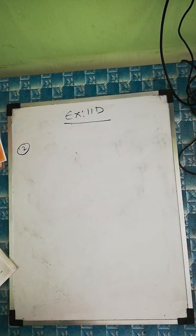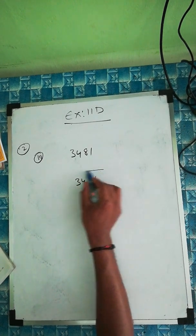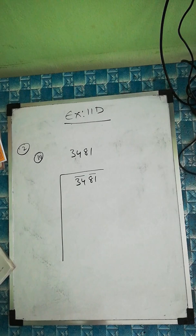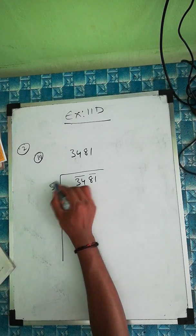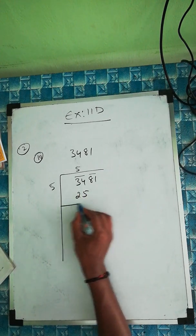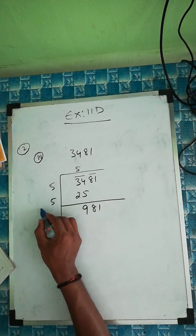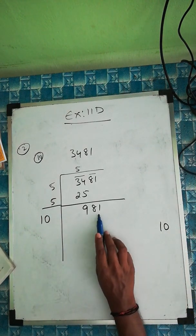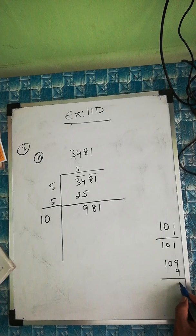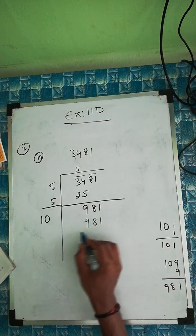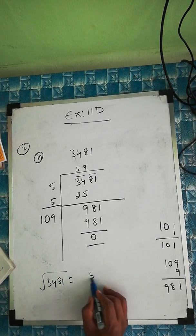Question number three is 3481. Group the digits: 34 and 81. For 34, which perfect square is nearest? 5×5=25 and 6×6=36 — 36 is too large, so we take 25. Subtract: 34 minus 25 equals 9. Bring down 81, giving 981. Write 5 again and add: 5 plus 5 equals 10. We need a digit for 10-something times that digit to give 981. Try 9: 109×9=981. Yes! So the square root of 3481 is 59.